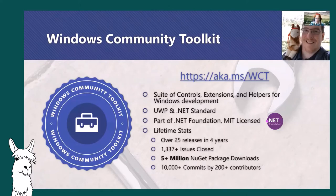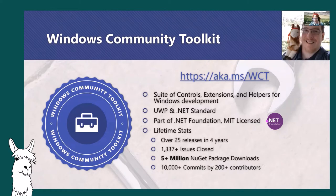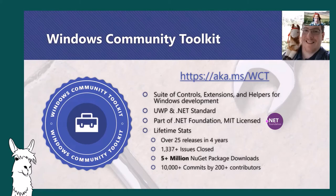The Windows Community Toolkit is a suite of controls, extensions, and helpers, mainly focused at Windows development — so UWP — but we also have a lot of .NET standard stuff now, such as the toolkit we're going to be talking about today. We're part of the .NET Foundation and all the work we do is open sourced under MIT license on GitHub. Over the last four years we've had over 25 releases, over 1000 issues closed, over 5 million NuGet package downloads, with over 10,000 commits from over 200 contributors.